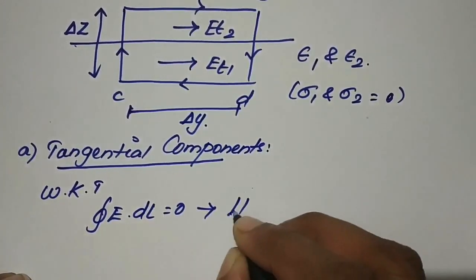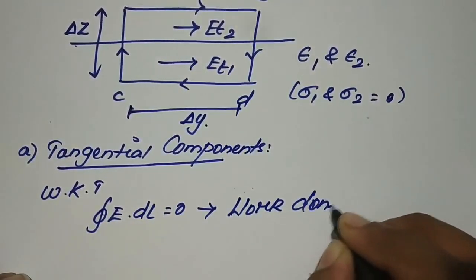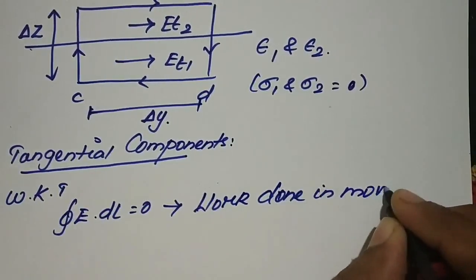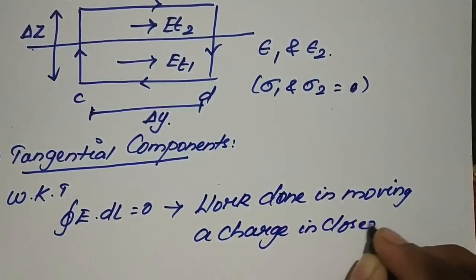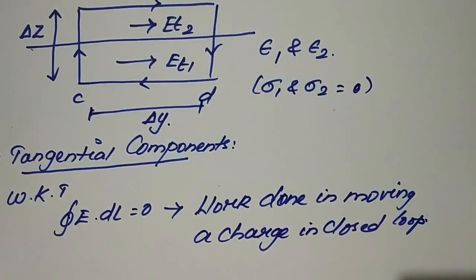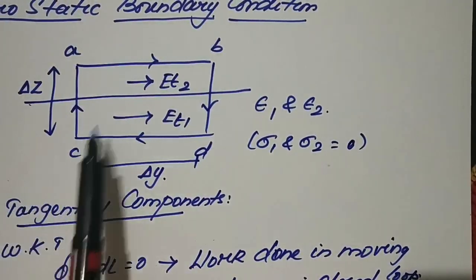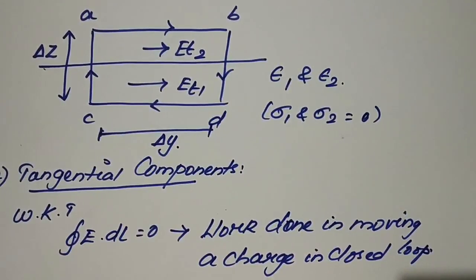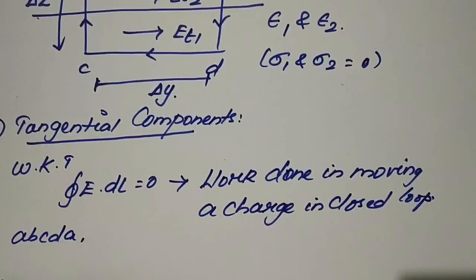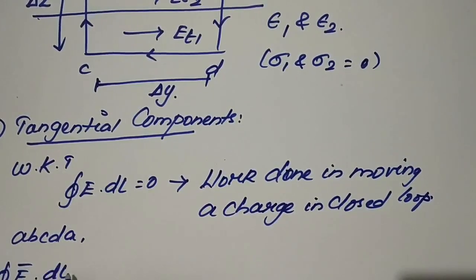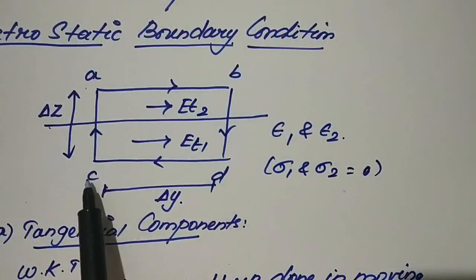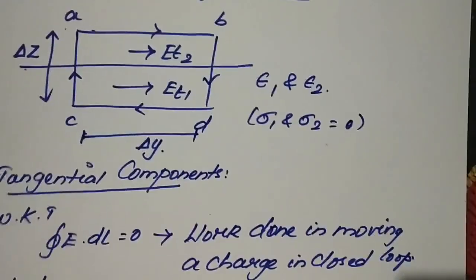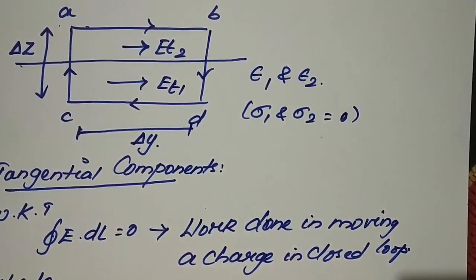This is nothing but the work done in moving a charge in a closed loop. Applying this to the rectangular path a-b-c-d-a, the closed integral of E dot dl equals the sum of contributions from segments ab, bc, cd, and da — all equal to 0.